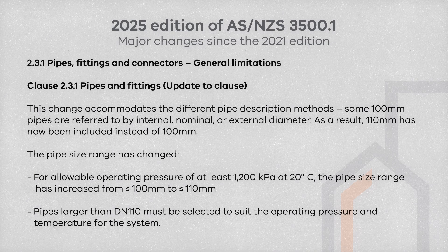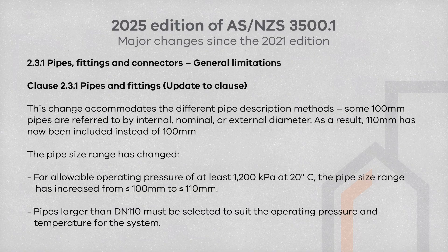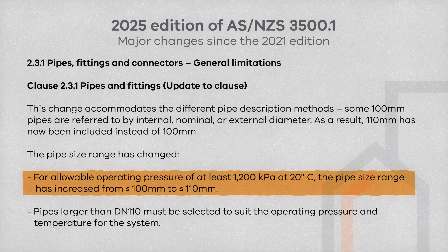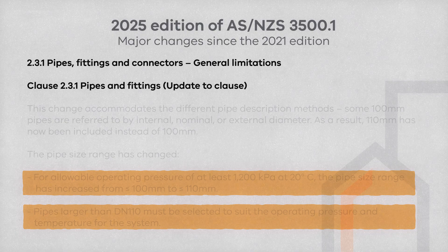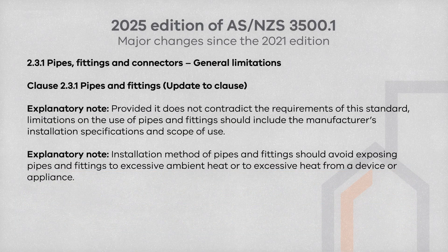Clause 2.3.1 now expands on the requirements by including 110mm in the clause to accommodate for the differences in how some pipe sizes are described — such as internal, external or nominal. For pipe sizes between 100mm to 110mm, the allowable operating pressure remains the same as the previous 2021 edition: 1200 kPa or 1.2 megapascals at 20 degrees Celsius. For pipe sizes larger than 110mm, they must accommodate the operating pressure and temperature for the system. Be sure to refer to the manufacturer's installation specifications and scope of use, and avoid exposure to excessive heat for any appliance.